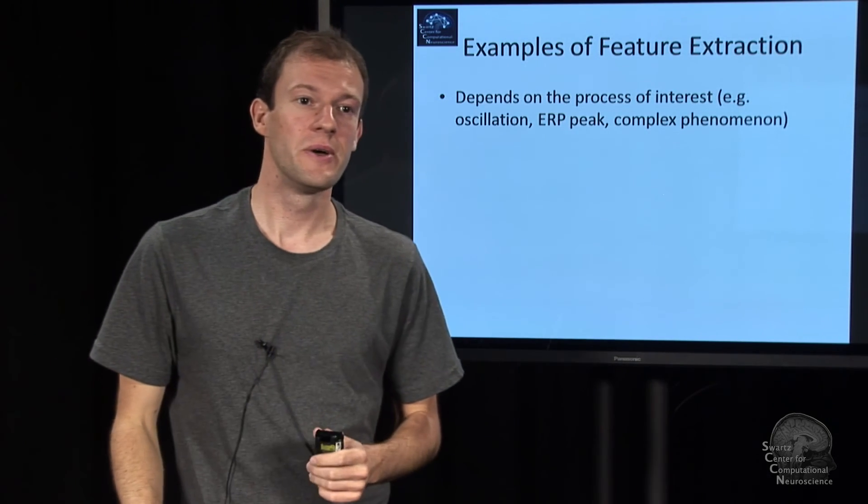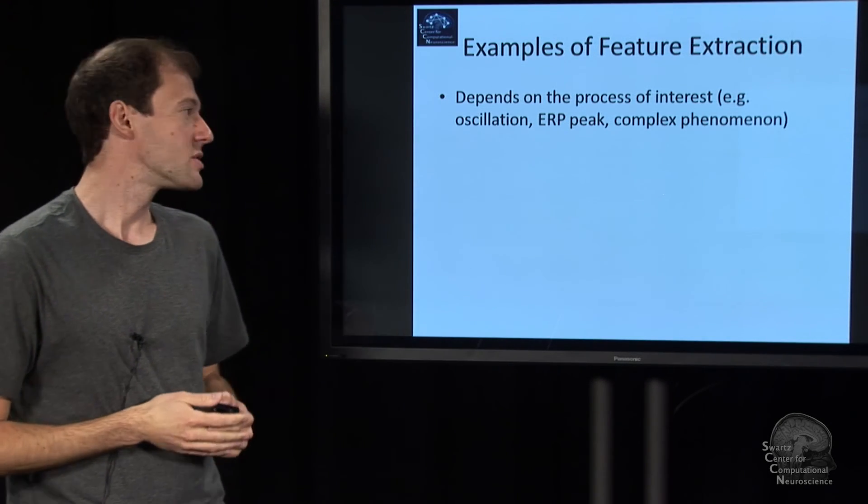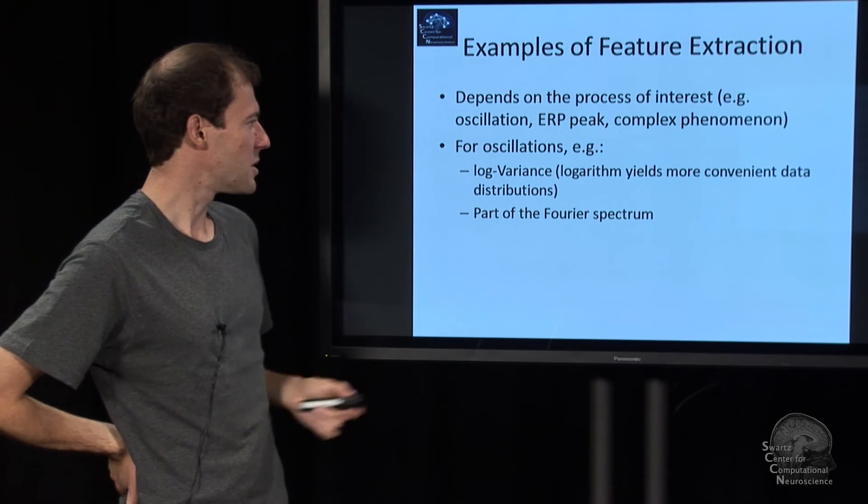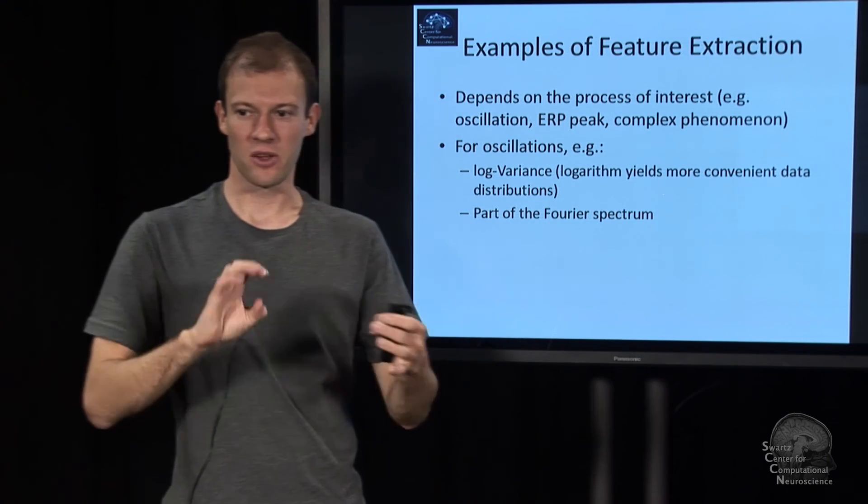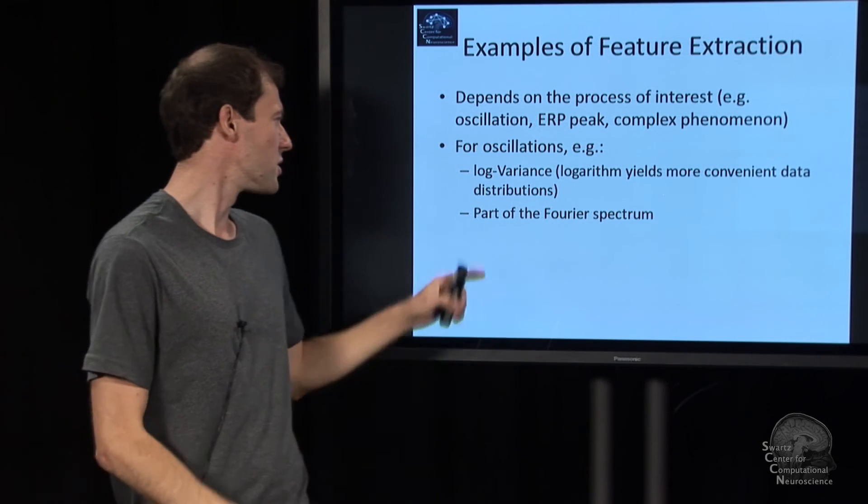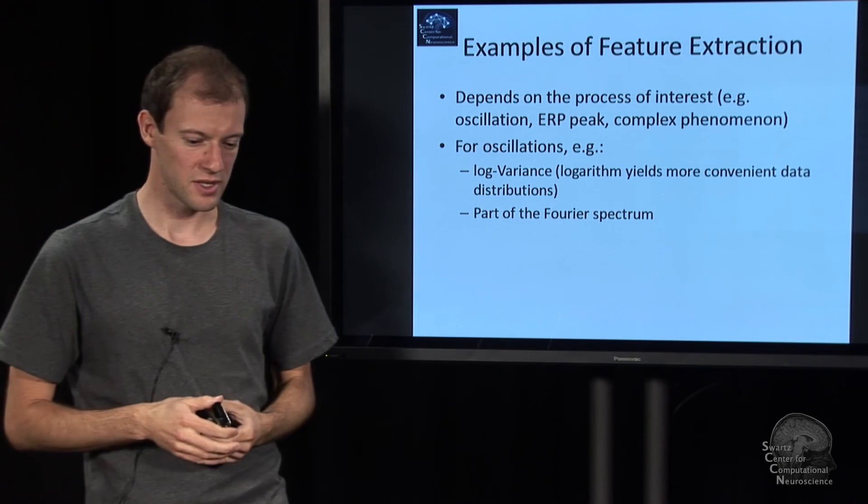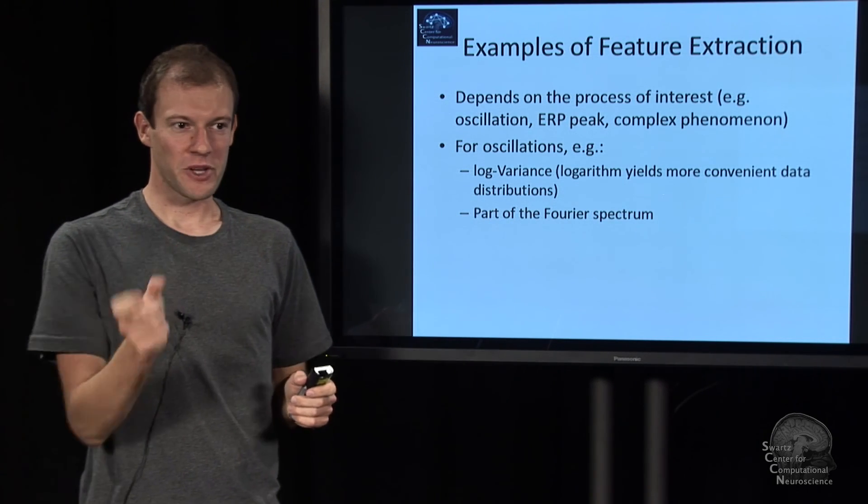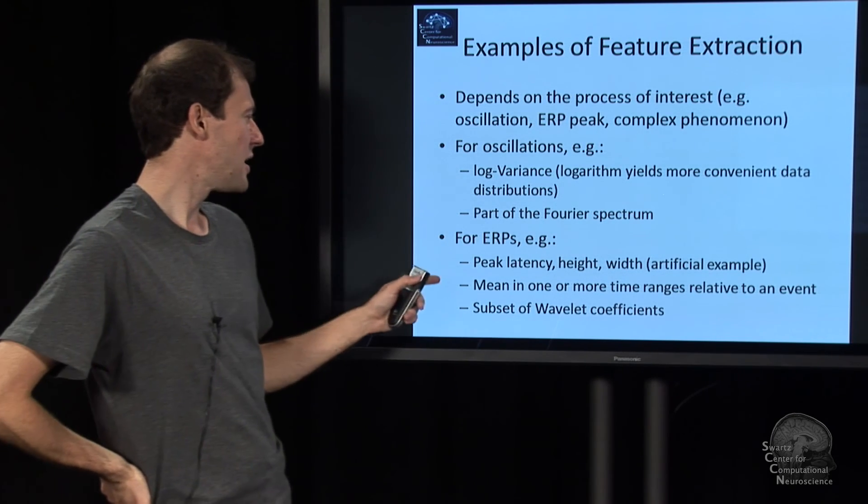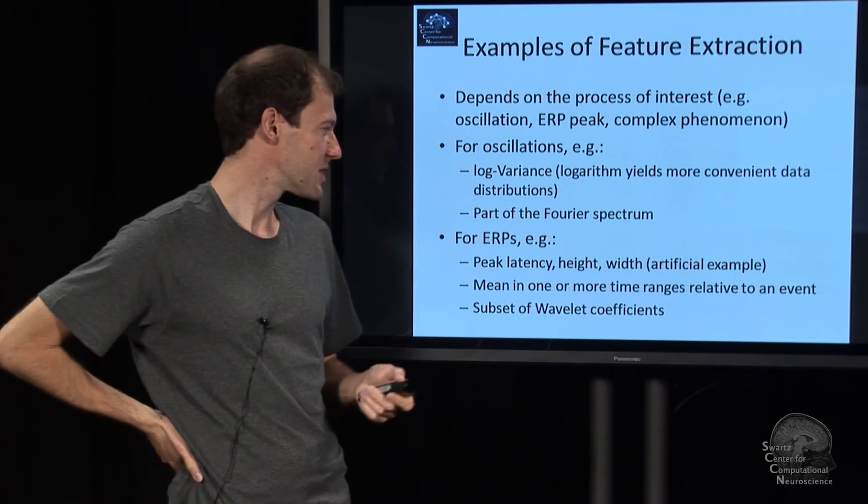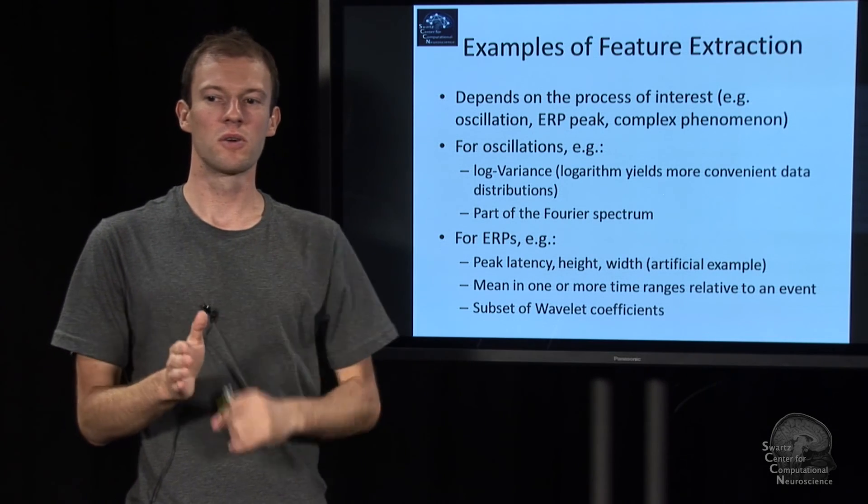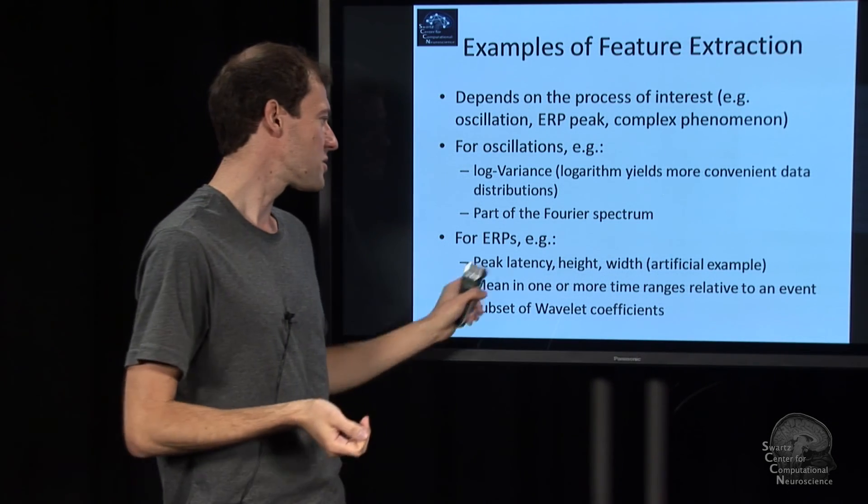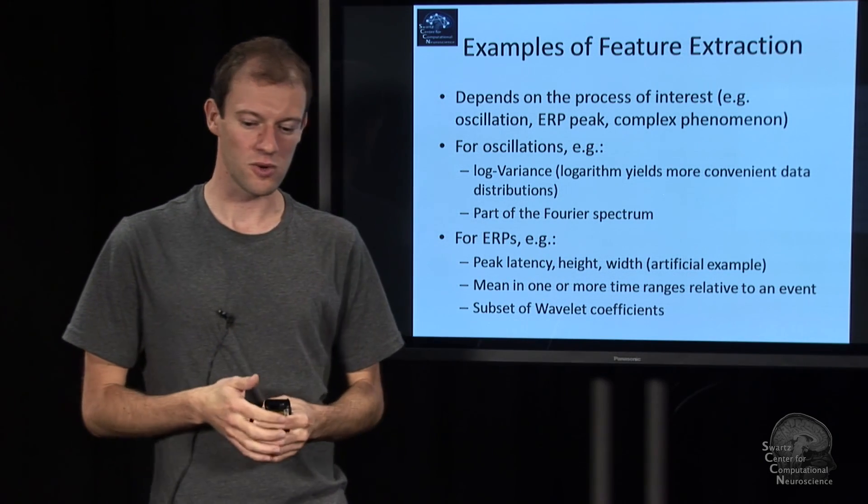So here's a simple example for feature extraction. First and foremost, as I said, they're informed by the process that you're trying to get at. And so for oscillations, for example, you can take the variance of the signal in a frequency band or so. That would be a feature. It kind of relates to the amplitude. Or the logarithm of that, because logarithm of the variance, in a sense, is more Gaussian than the variance itself, because the variance has a square in there. Or parts of the Fourier spectrum of the data, these would be some valid features. Or if you have a so-called event-related potential, as we briefly touched on in the second lecture, you could say, in my chunk of EEG, I have a peak somewhere. And the peak has a bunch of parameters, like the latency, the amplitude of the peak, and say the width of the peak. This is rather constructed, but it would be features. You know, it's three numbers that characterize a long time series.